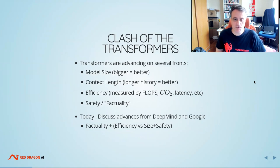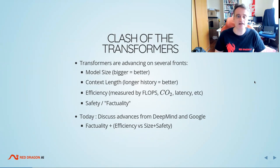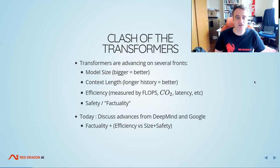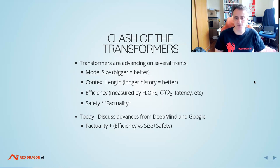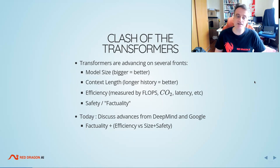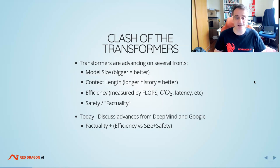In this talk I'm going to go through a few things: how transformers work, briefly, in case you're not totally familiar, then the battle for size where bigger is better, essentially leading to GPT-3 as the headline transformer. I'll explain why that may not be the be-all and end-all, and go on to explain the advances DeepMind and Google have made on the fronts of factuality, efficiency, safety, and size — essentially, we don't want these machines to lie to us or abuse us.